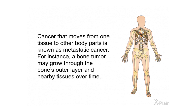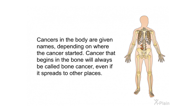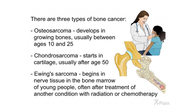A bone tumor may grow through the bone's outer layer and nearby tissues over time. Cancers in the body are named depending on where the cancer started — cancer that begins in the bone will always be called bone cancer, even if it spreads to other places. There are three types of bone cancer.